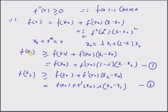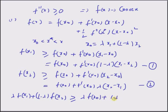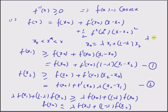By multiplying the first inequality with lambda and the second with 1 minus lambda and adding the two weighted inequalities, we get lambda times f of x 1 plus 1 minus lambda times f of x 2 is greater than or equal to lambda times f of x naught plus 1 minus lambda times f of x naught. The two other terms cancel each other, since they are lambda times 1 minus lambda in magnitude but opposite in sign. Rewriting this inequality gives f of x naught is less than or equal to lambda times f of x 1 plus 1 minus lambda times f of x 2, where lambda is between 0 and 1.